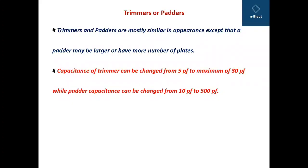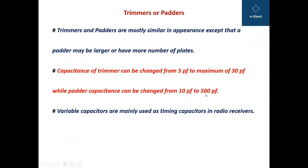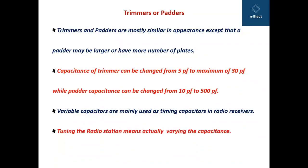Capacitance of trimmers can be changed from 5 pF to 30 pF, while padder capacitance can be changed from 10 pF to 500 pF. Variable capacitors are mainly used as timing capacitors in radio receivers, and tuning the radio station means adjusting or varying the capacitance.